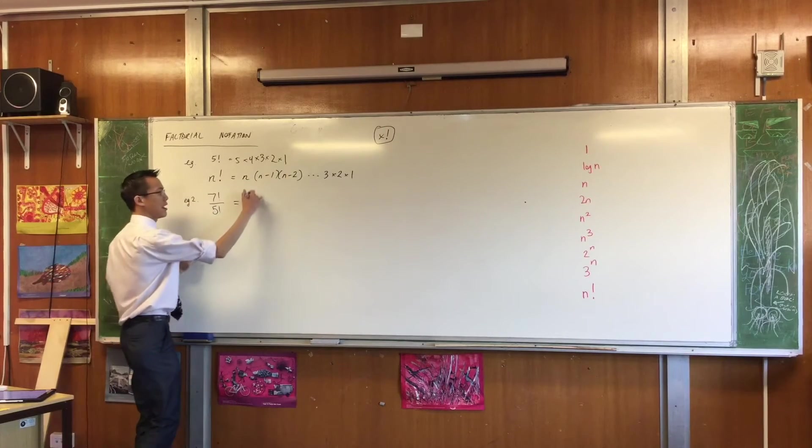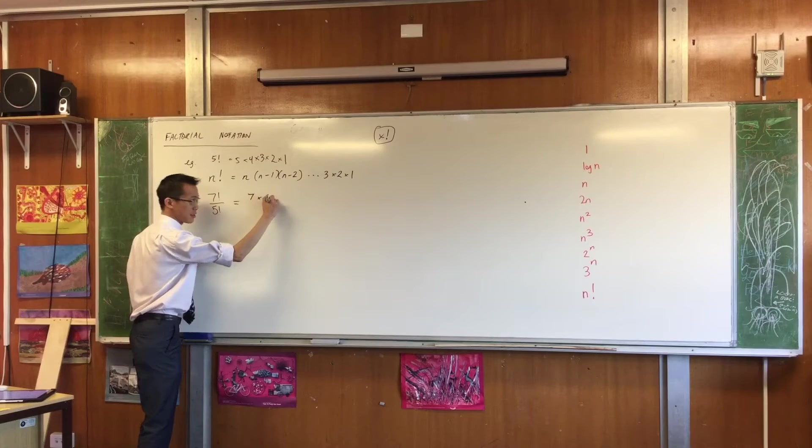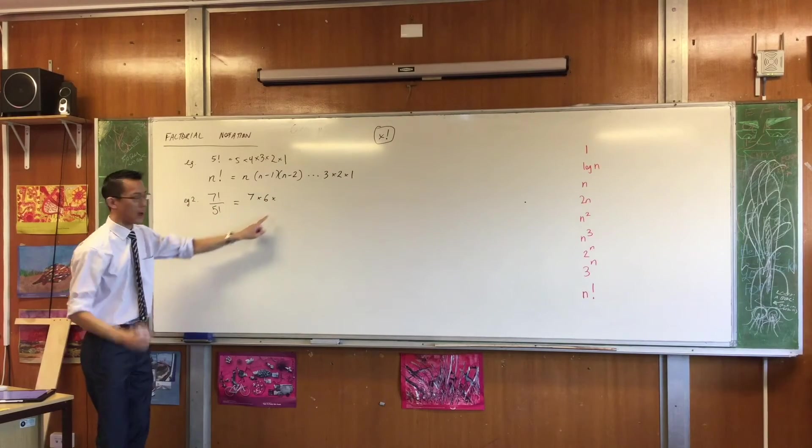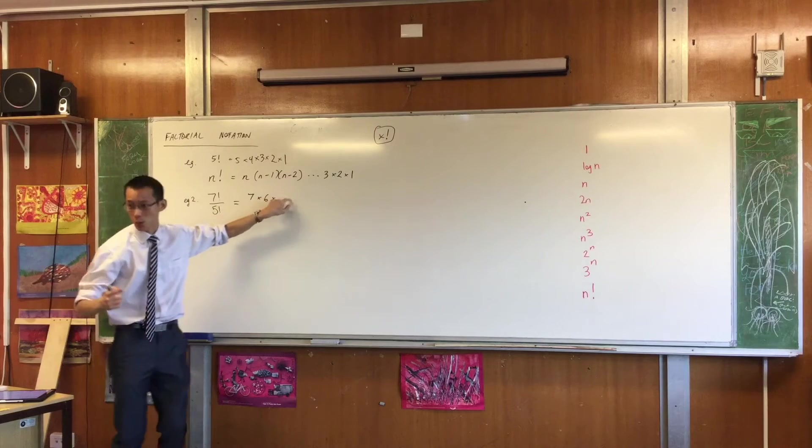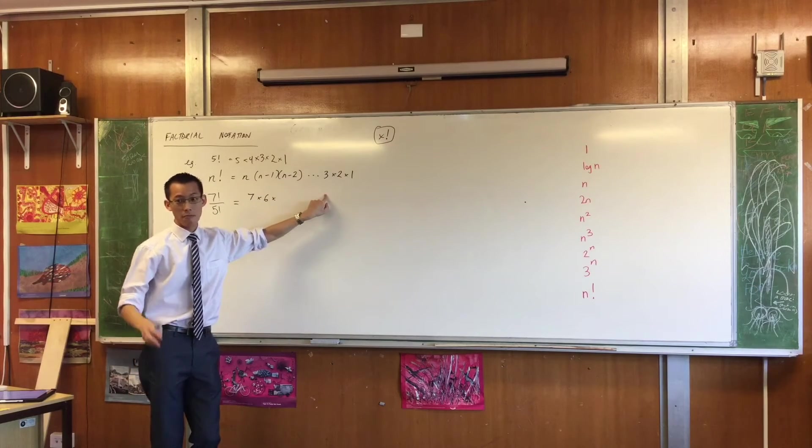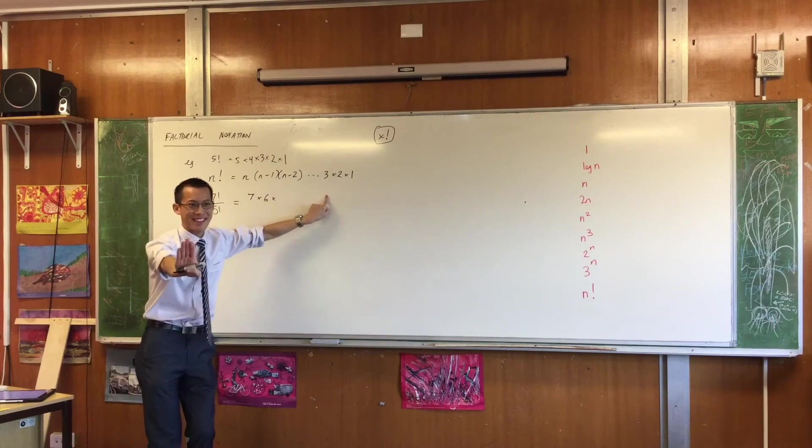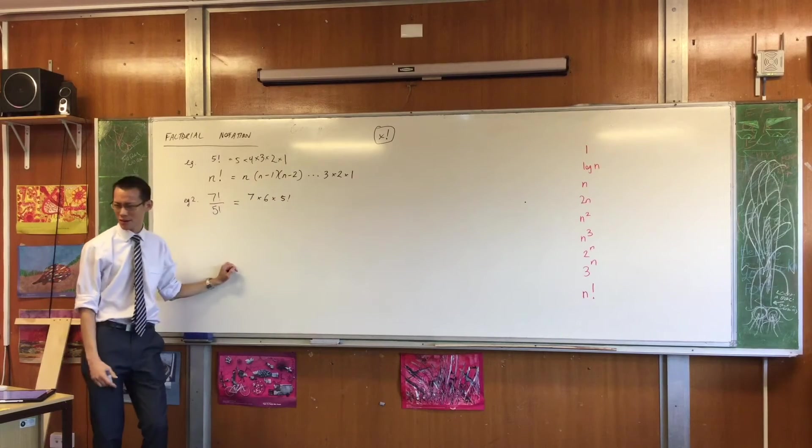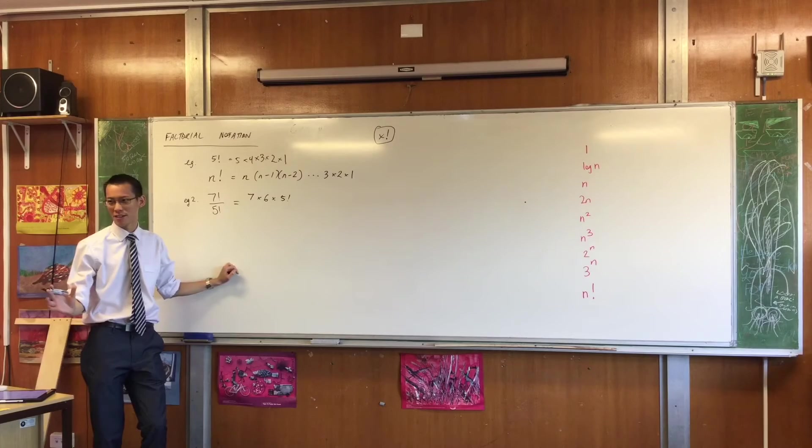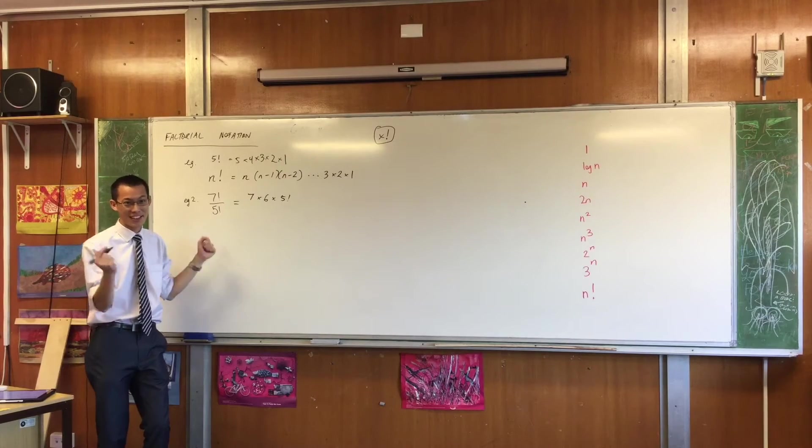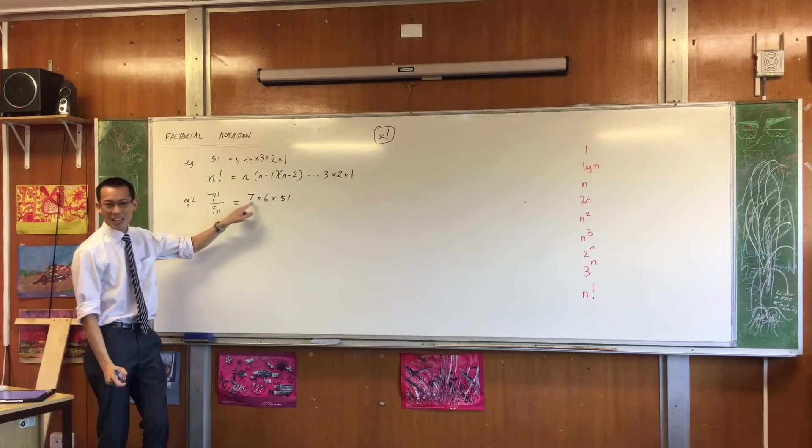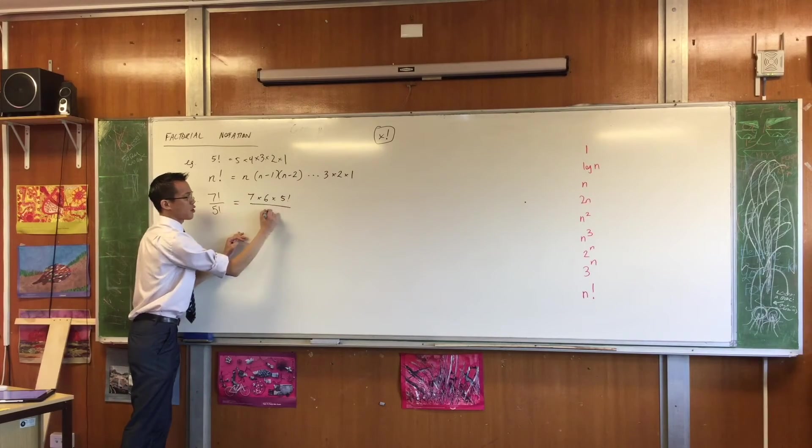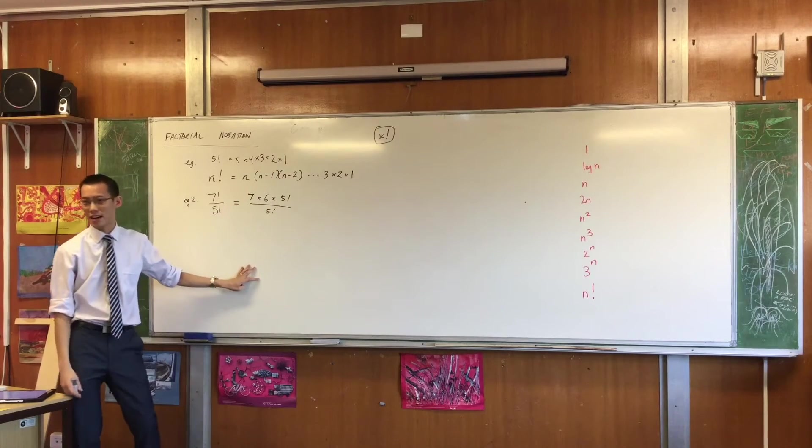7 factorial, by definition, is 7 times 6 times... Now, before I write the next bit, what I'm thinking is 5 times 4 times 3 times 2 times 1. And that's what I had in my mind. But I don't need to write that, because I have notation for that. It's 5 factorial. Do you agree? Does that make sense? This is just a shortcut for us. Are you getting the sense? I just love a good shortcut. So that's what 7 factorial is.